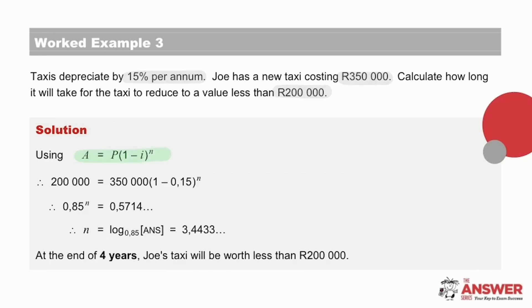Substitute the values from the information, the original value, the reduced value in the future, the percent per year, and note that we are solving for n. The 0.85 is from this bracket, 1 minus 0.15. And this value here we get from dividing 200,000 by 350,000.